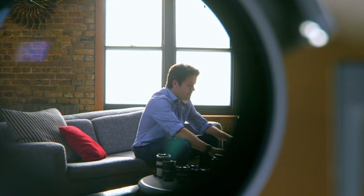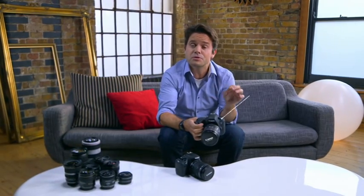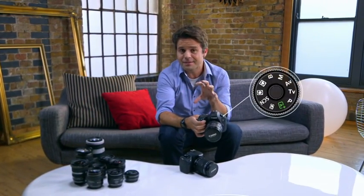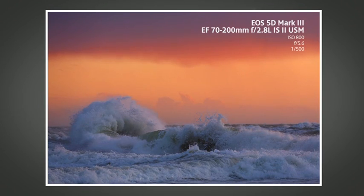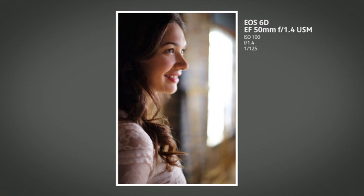In P, program mode, the camera will select both the shutter speed and the aperture, but you do still have some creative influence. In TV, which stands for time value, it's shutter priority — you choose the shutter speed and the camera will automatically select the aperture to ensure the correct exposure. This is great for photographs that might involve some sort of movement. In AV, aperture priority mode, you select the aperture and the camera will automatically choose the shutter speed to obtain the correct exposure. This is the one generally used for portraits because it enables you to control the depth of field and create that nice blurred background.